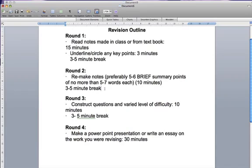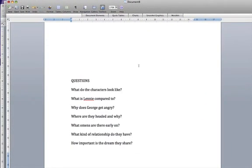So from your notes, the stuff that you've got here and the stuff that you read here, you construct for yourself ten questions. You don't actually have to answer them yet. So they've got to be of varied difficulty. So here's another bunch of examples. My first question to myself: What do the characters look like? Very easy. What is Lenny compared to? Okay, so that's picking some items out. Why does George get angry? Again, I've got a very simple reason and you could go for a deeper reason on that. Where are they headed and why? Again, a simple question. What omens are there early on? What signs are there? Okay, that's a slightly harder question. What kind of relationship do they have? Okay, that's quite a harder question as well. How important is the dream they share? Now that is obviously really important.